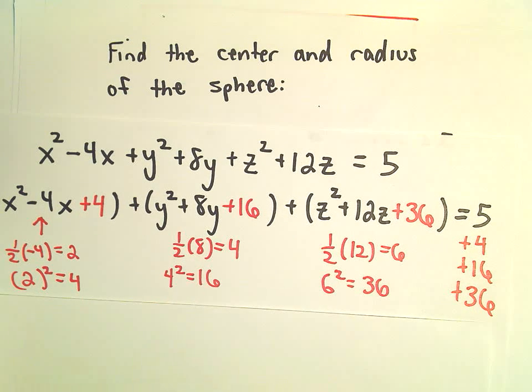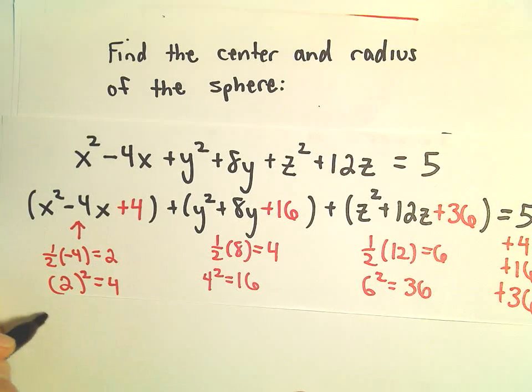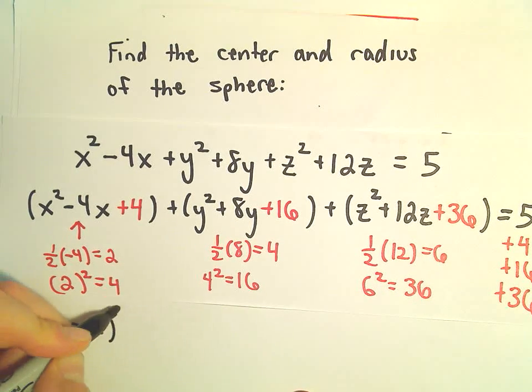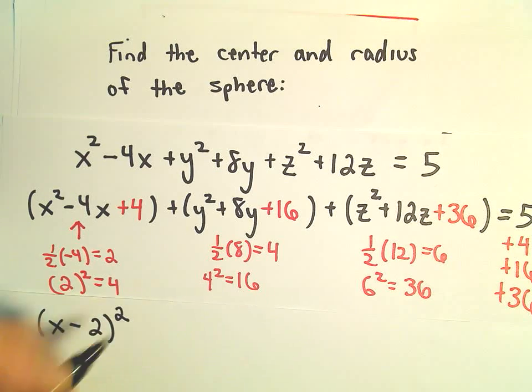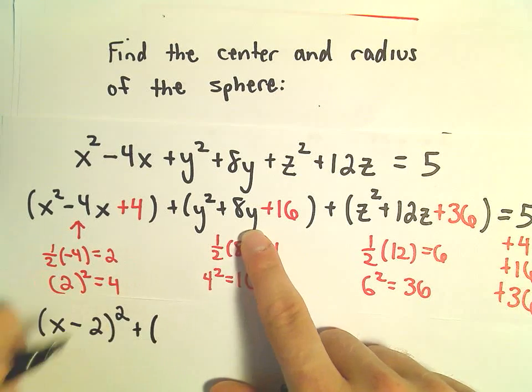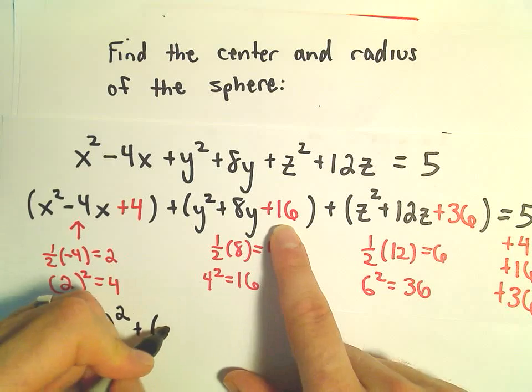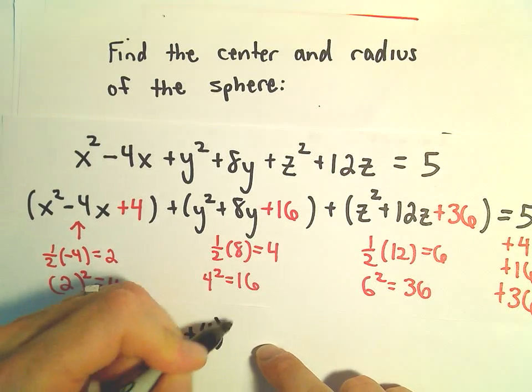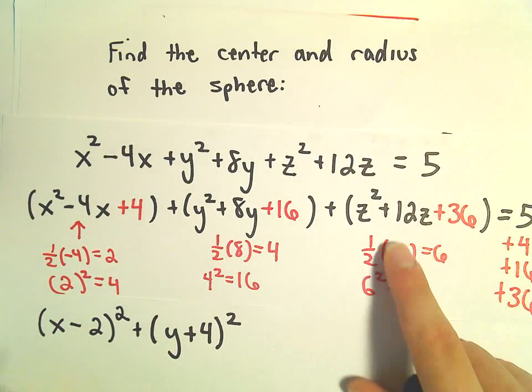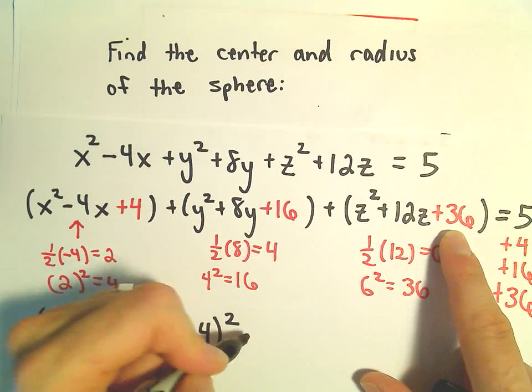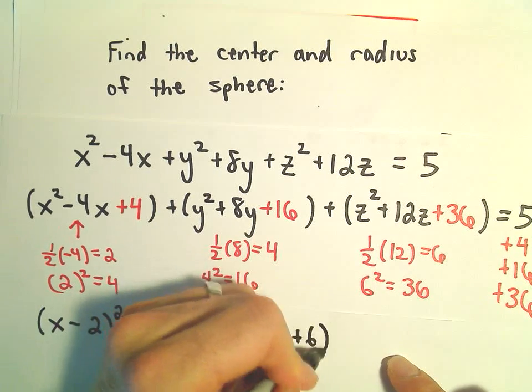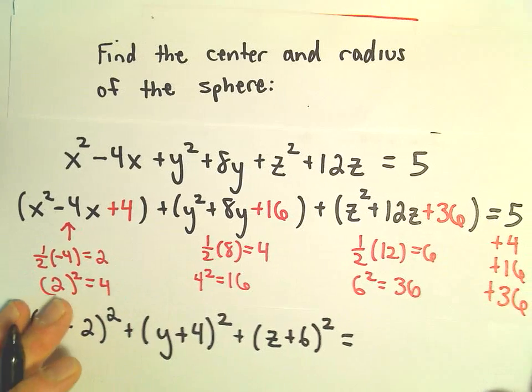And now the idea is, x squared minus 4x plus 4 is a perfect square. We can simply write that as x minus 2 quantity squared. y squared plus 8y plus 16, we can write that as y plus 4 squared. z squared plus 12z plus 36, we can write that as z plus 6 squared.